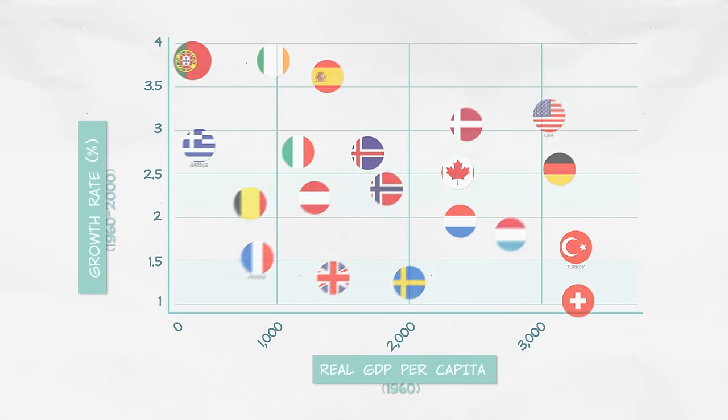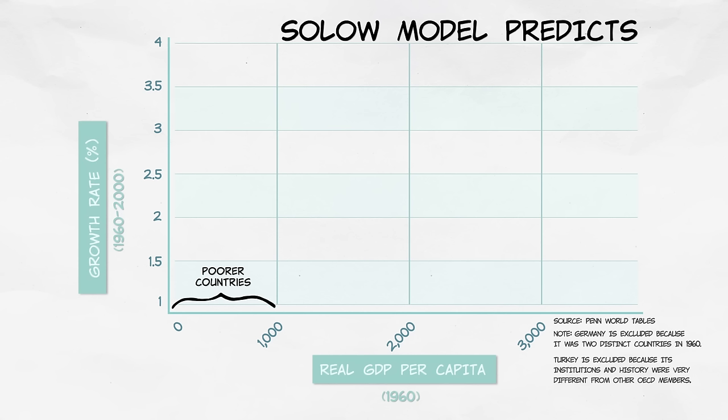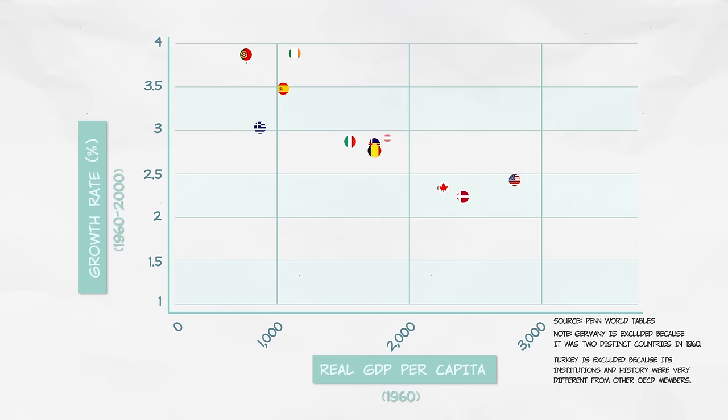Here we're going to plot the growth rate of these countries over 40 years on the vertical axis, and real GDP per capita in 1960 on the horizontal axis. Remember, the Solow model predicts that the countries which were poorer in 1960 should have grown faster over the next 40 years than the countries which were wealthier in 1960. And that's exactly what we see.